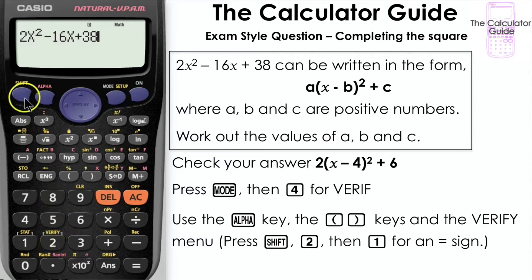And then we want 1 for an equal sign, and then using the brackets or parentheses keys, we'll then input our completed square version.